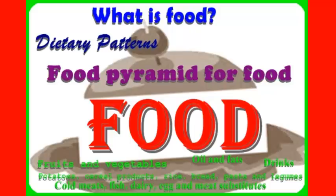Today, human nutrition is classified in a number of categories: fruits and vegetables; potatoes, cereal products, rice, bread, pasta and legumes; cold meats, fish, dairy, eggs and meat substitutes; oils and fats; drinks; pastries and snacks; and candy and cake.